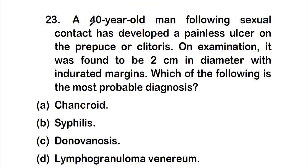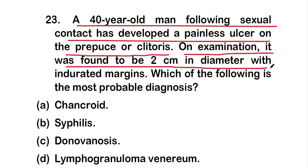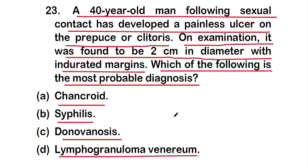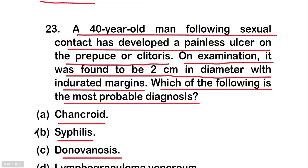Question 23: A 40-year-old man following sexual contact has developed a painless ulcer on the prepuce or clitoris. On examination it was found to be two centimeters in diameter with indurated margins. The options are: option A: chancroid, option B: syphilis, option C: donovanosis, or option D: lymphogranuloma venereum. The right answer is option B, syphilis, a sexually transmitted disease.